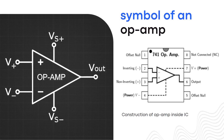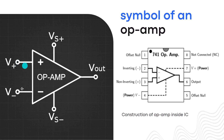The op amp consists of two input terminals. We have the inverting terminal, denoted with the negative sign, and the non-inverting input, denoted with the plus sign. These are the two inputs of the operational amplifier. Then we have the output terminal, from which the voltage comes out.